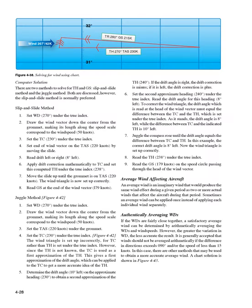Computer solution: there are two methods to solve for TH and GS — the slip and slide method and the juggle method. Slip and slide method: 1. Set WD 270° under the true index. 2. Draw the wind vector down the center from the grommet, 50 knots. 3. Set TC 230° under the true index. 4. Set end of wind vector on TAS — 220 knots — by moving the slide. 5. Read drift — 8° left. 6. Apply drift correction to TC and set the computed TH (238°) under the true index. 7. Move the slide up until the grommet is on TAS (220 knots). 8. Read GS — 179 knots — at the end of the wind vector.